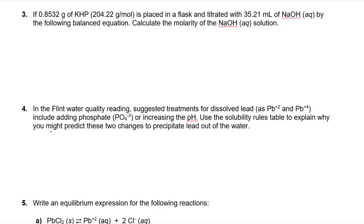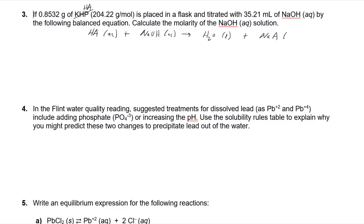This next one involves titration — finding the molarity of sodium hydroxide using KHP, a weak acid. Write the reaction: HA (aqueous) plus NaOH (aqueous) gives water plus sodium salt NaA (aqueous). Since KHP is monoprotic, it's a one-to-one ratio of acid to base. That's the key ratio. Everything else is simple: go from grams of KHP to moles using the formula weight, then moles over liters gives molarity.